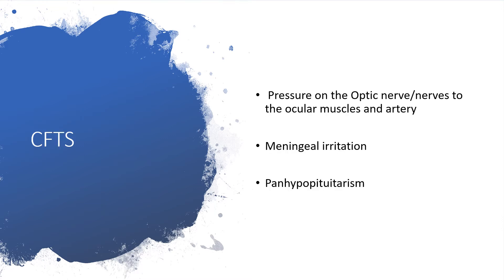What are the possible clinical features? The clinical features I will talk about will center around three major possible causes: either secondary to the pressure effect on the optic nerve, pressure effect on the nerves to the ocular muscles, or pressure effect on the blood supply. If that is not the cause of the clinical feature, then another part could be meningeal irritation. And of course, pan-hypopituitarism.